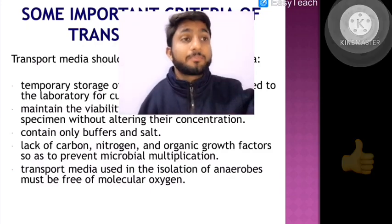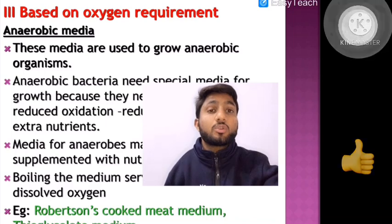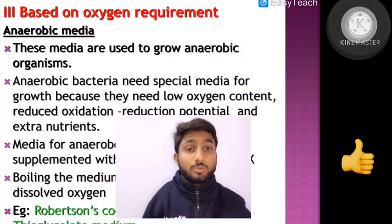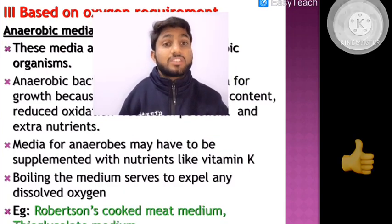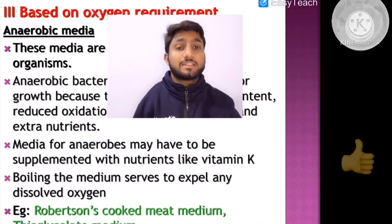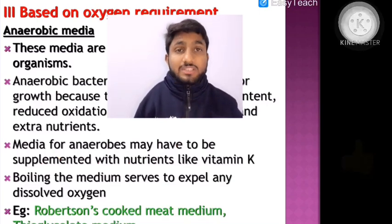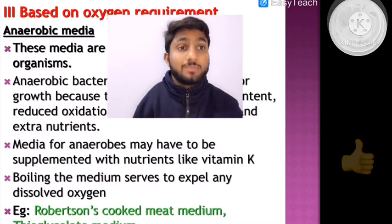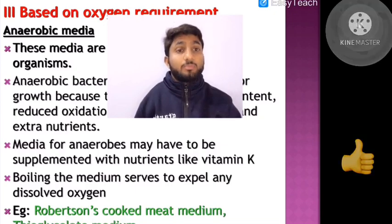Based on oxygen requirements, we classify anaerobic media. Anaerobic media are used to grow anaerobic organisms, which need low oxygen content, reduced oxidation-reduction potential, and extra nutrients. Reducing agents are added to reduce the oxidation-reduction potential and remove excess oxygen. The media may also be supplemented with nutrients like vitamin K and other vitamins to improve bacterial survival, though not to promote excessive multiplication. The medium can be boiled to expel any dissolved oxygen before inoculating microorganisms.